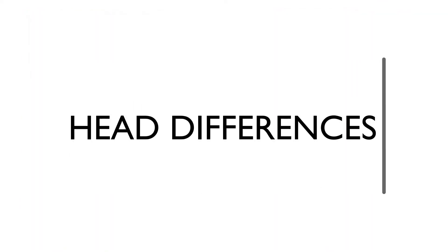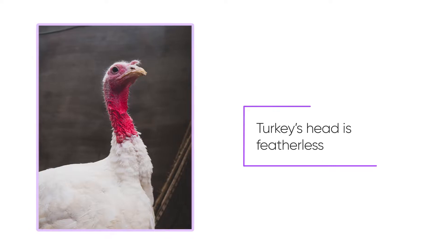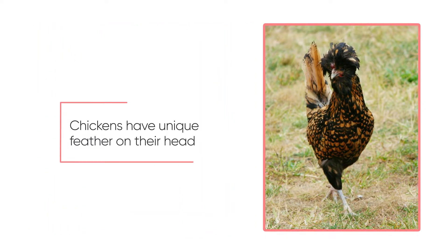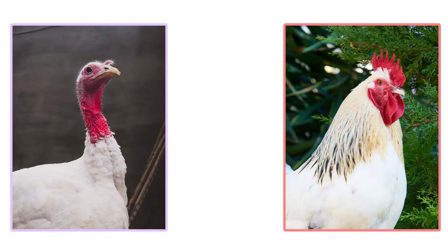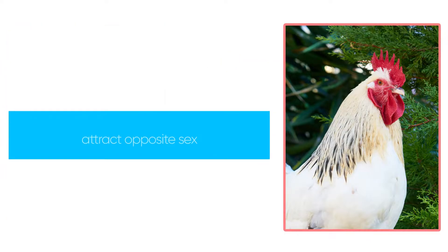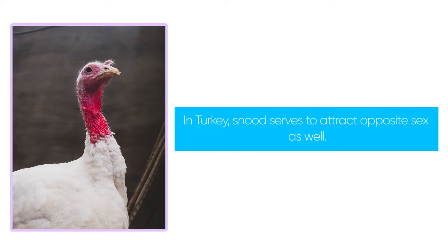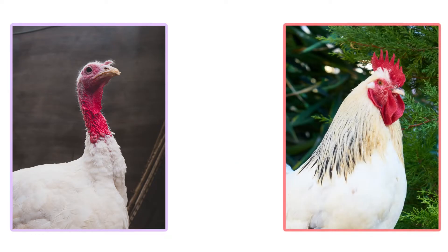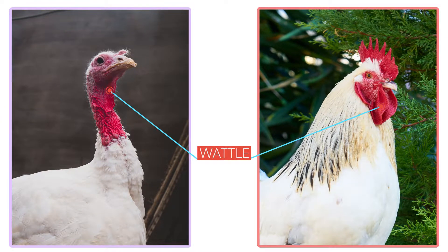Now let's closely look at the head of a chicken and turkey. Turkey's head is featherless, unlike chickens. Some chickens have unique feathers on their head. If you closely look at these two pictures, chicken has a comb on its head and turkey has a snoot on its head. The purpose of the comb is to lose heat and attract the opposite sex. In turkey, the snoot serves to attract the opposite sex as well. If you look below the head of both chicken and turkey, you can see a wattle in both, so there is not much difference there.